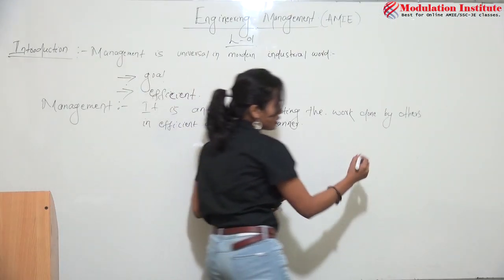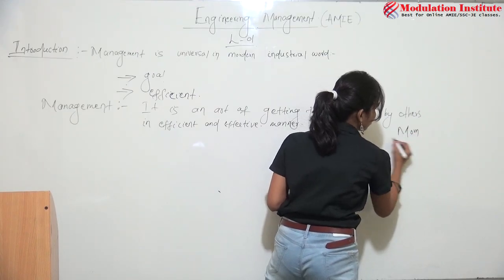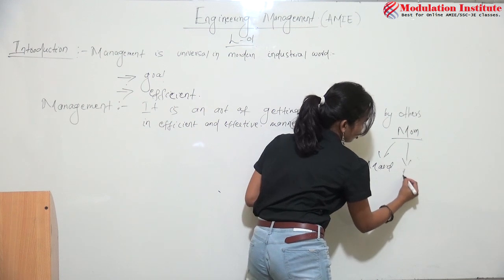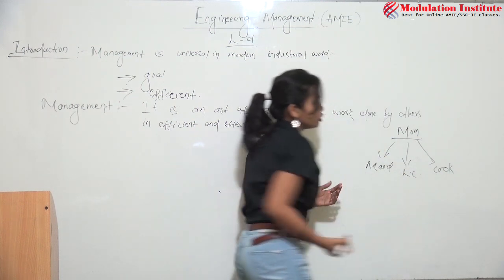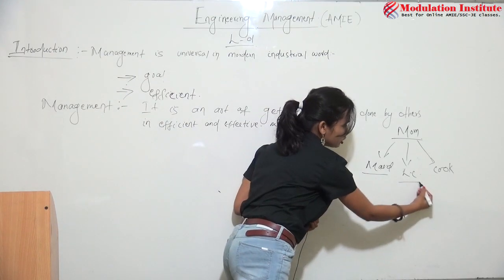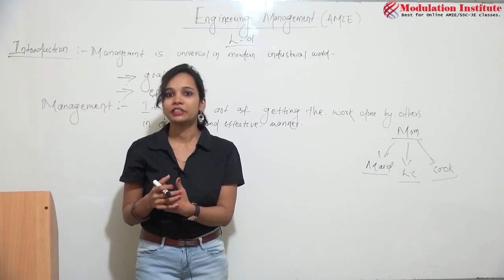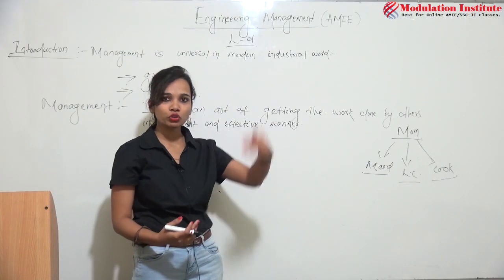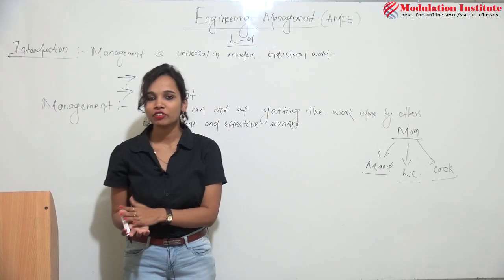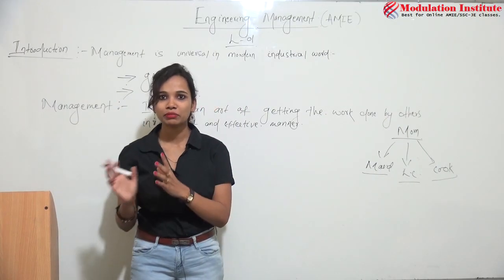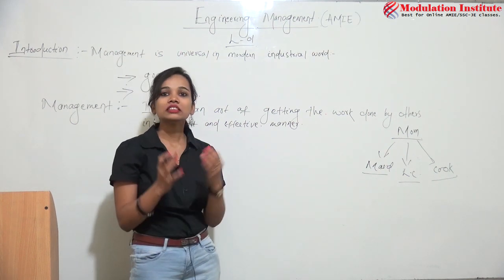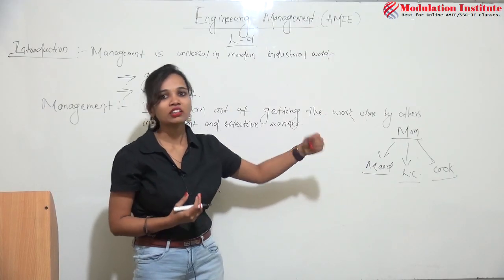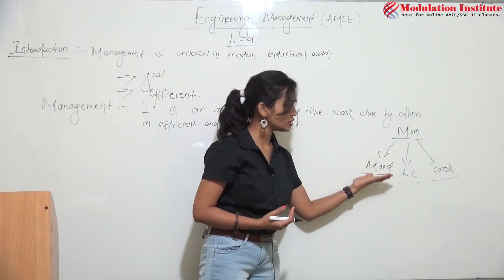Management is very simple to understand. In your house, you have a mom and there is a lot of work — in the morning, a maid, then a laundry cleaner, then a cook. At night, your mom checks whether the maid has cleaned well or not, whether the laundry is done well or not, and whether the food is delicious or not. If not, she gets it redone. So management is all over in your home itself — your mom acts like a manager, a house manager, getting the work done by others.